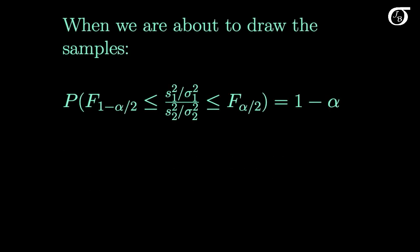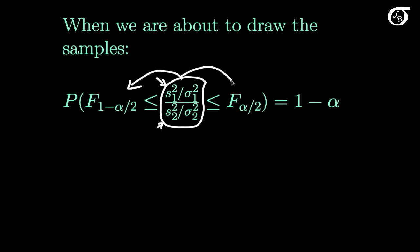Now when we're about to draw our samples, this S1 squared and this S2 squared are random variables. And thus this entire quantity here is a random variable with an F distribution. The probability it lies between these two values is 1 minus alpha.